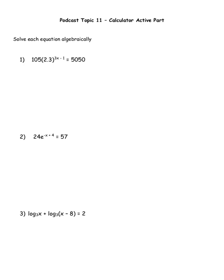Let's talk about how to solve each type of equation. Looking at the first example, I note that it is an exponential equation. The exponent 3x minus 1 does not apply to the 105, so the first step is to divide out the 105. Dividing both sides by 105 and grabbing my calculator, 5050 divided by 105 gives approximately 48.095, so we get 2.3 to the power of (3x − 1) equals 48.095.